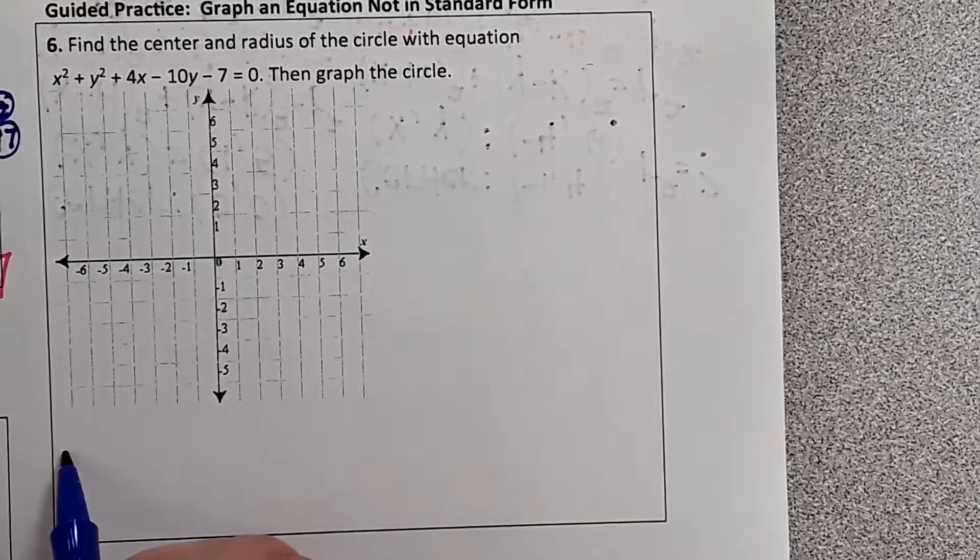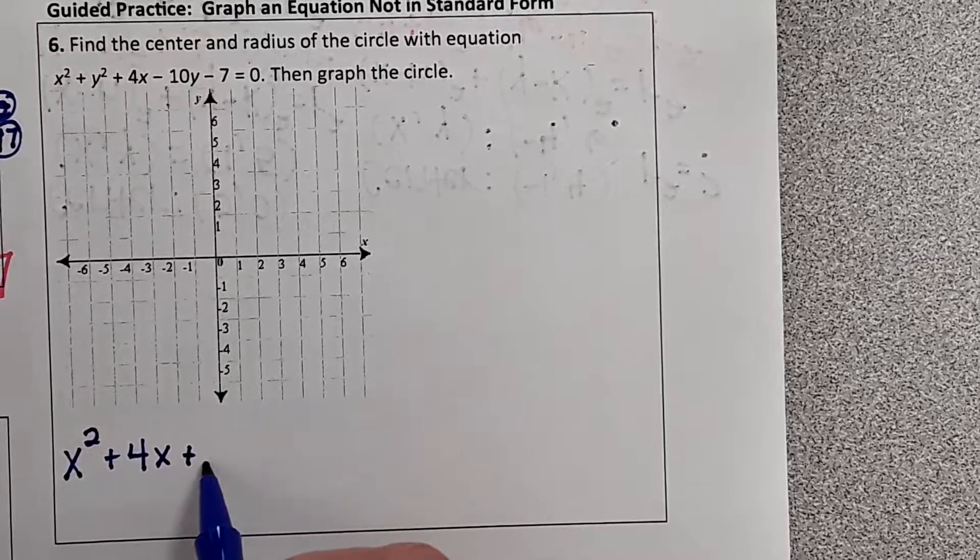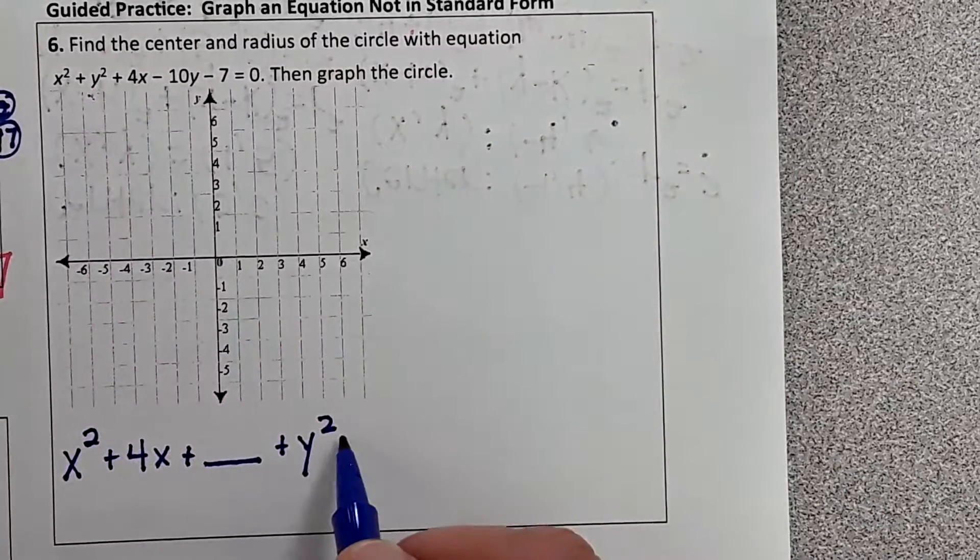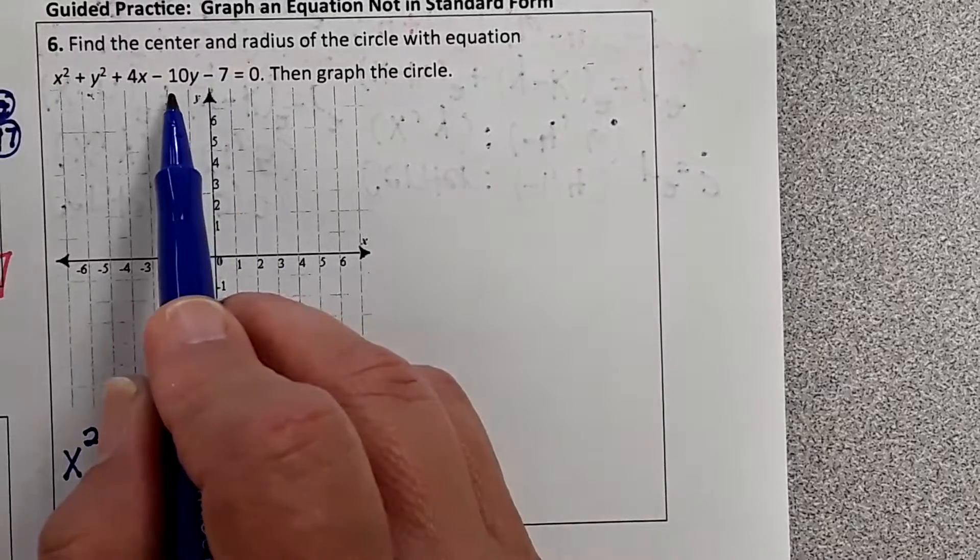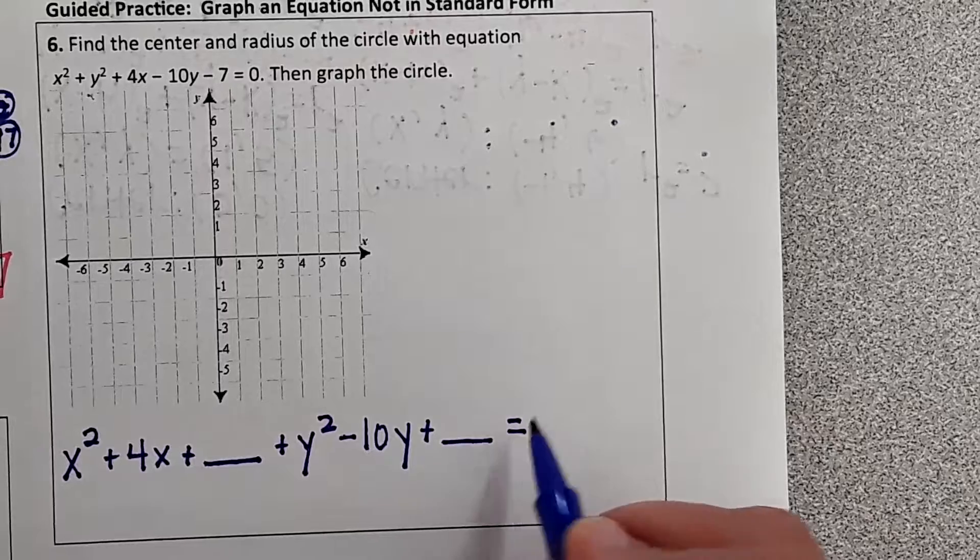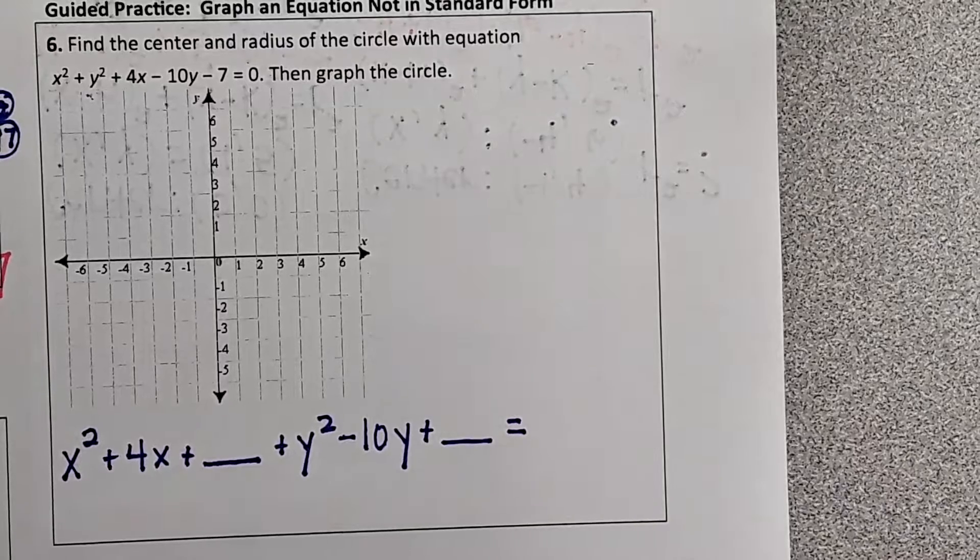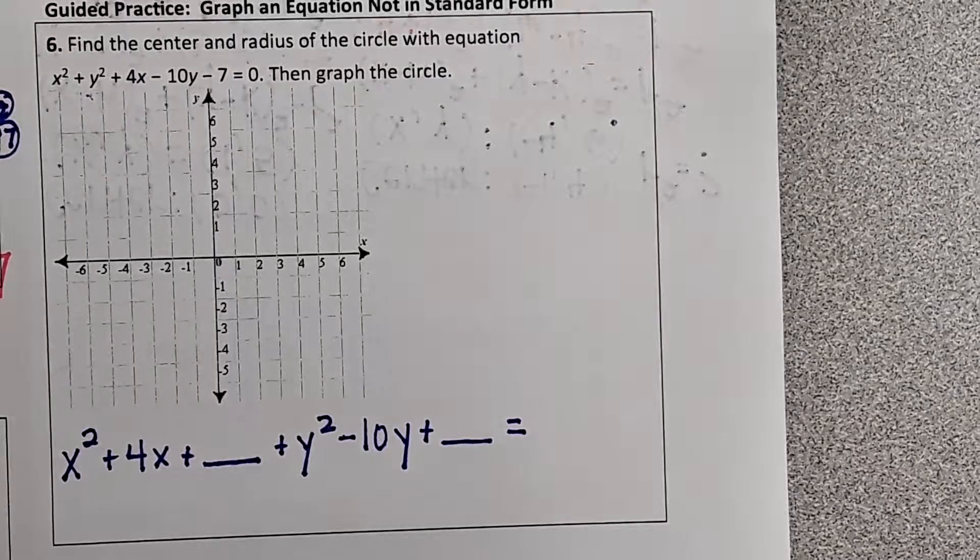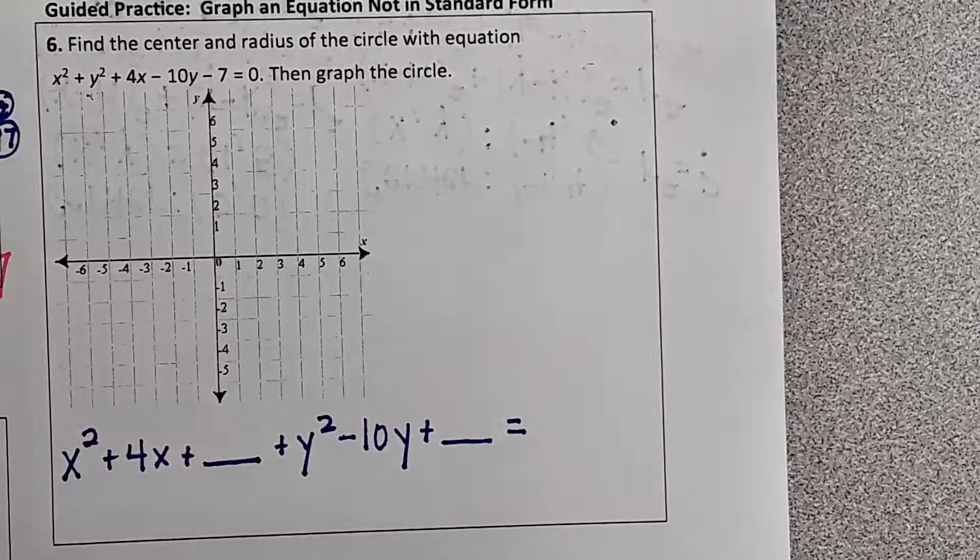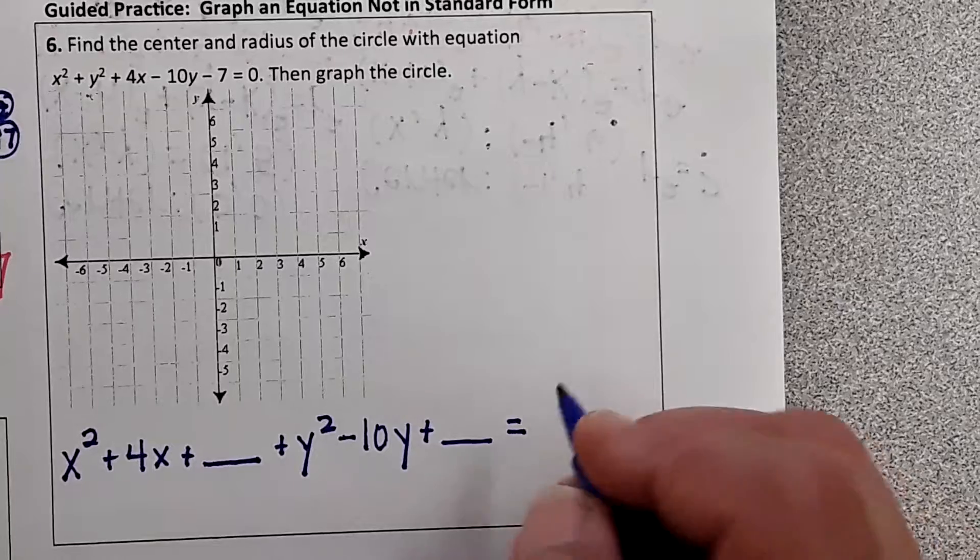When we go to write it we're going to write x squared plus 4x plus blank. Then plus y squared, then minus 10y, and then plus blank and equals. Now notice there's a negative 7 there. Notice that the negative 7 is not related to x, it's not related to y because it's going to be eventually part of our radius. So if it's negative on the left side I need to move it to the right side. When I move it, it's going to be positive.